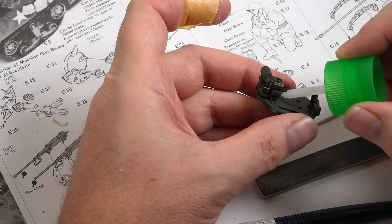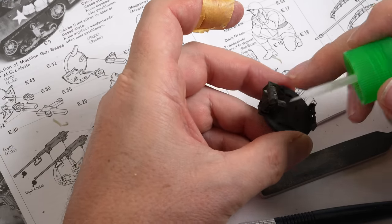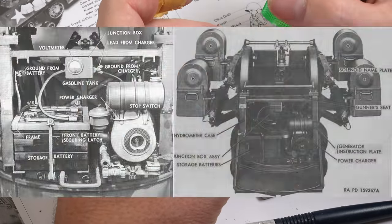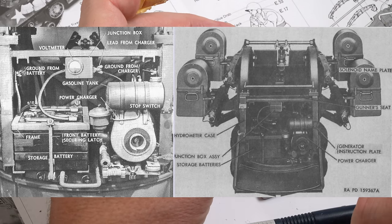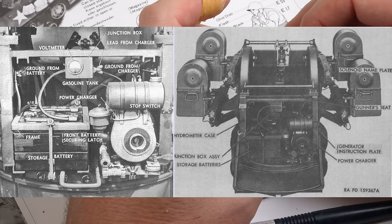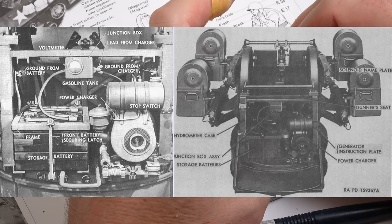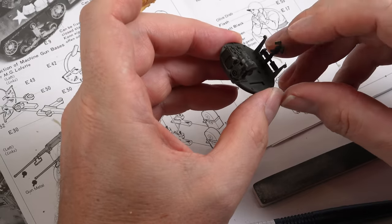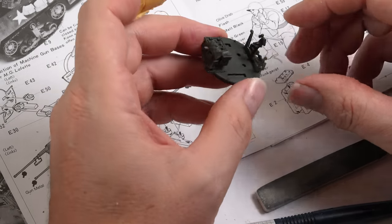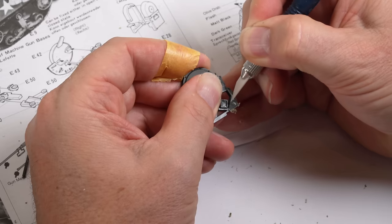The construction of the M45 quad mount was simple and included the small engine and battery that allowed it to operate autonomously from the half track. Detail was basic and I really had to fight the urge to add wiring and include a little more scratch built detail to these areas. I'd committed to this out of the box so I had to make peace with the soft detail.